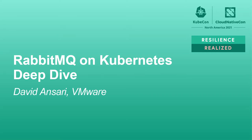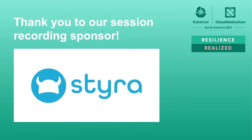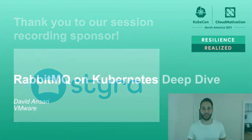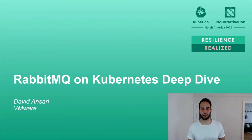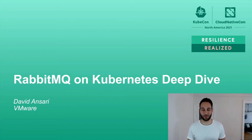Welcome to the session RabbitMQ on Kubernetes Deep Dive. RabbitMQ is known as a traditional enterprise middleware, and many of you associate it with VMs or bare metal machines. Maybe you have installed it with a package manager and configured it with Chef or Puppet. But what you might not know is that the best experience to run RabbitMQ is on Kubernetes, and that's where our team has been heavily investing over the last few years.